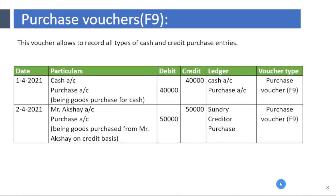Purchase Voucher F9. This voucher allows you to record all types of cash and credit purchase entries. For example: purchased goods for cash 40,000; purchased goods from Mr. Akshay on credit of 50,000.